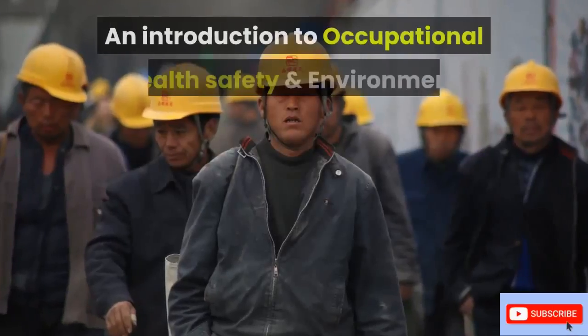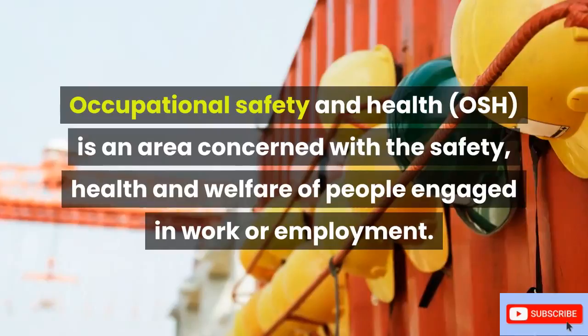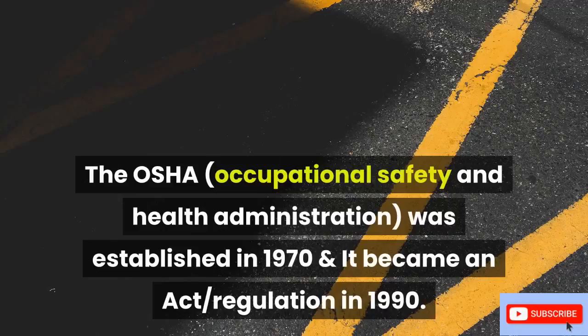An introduction to occupational health, safety, and environment. Occupational safety and health (OSH) is an area concerned with the safety, health, and welfare of people engaged in work or employment. Proper safety arrangements at work is the right of employees. The OSHA — Occupational Safety and Health Administration — was established in 1970 and became an act regulation in 1990.